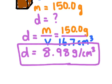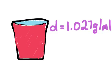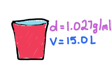Let's try another one. This time I'll give you the density and the volume, and you'll find the mass of the object. Here's a bucket filled with seawater. The density of seawater is 1.027 grams per milliliter, and this bucket has a volume of 15 liters. What is the mass of the seawater?